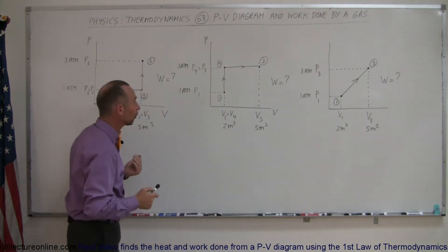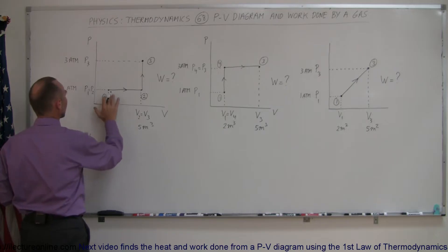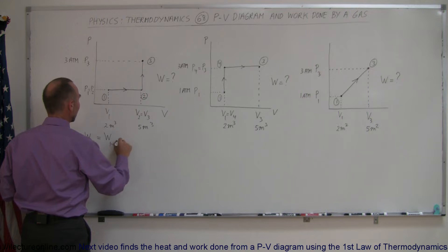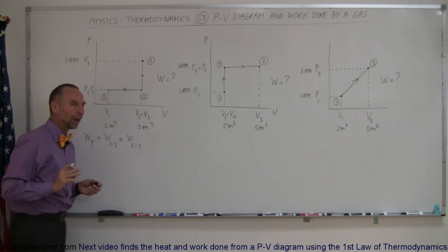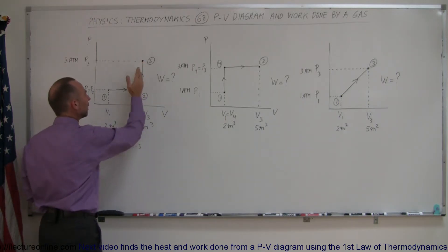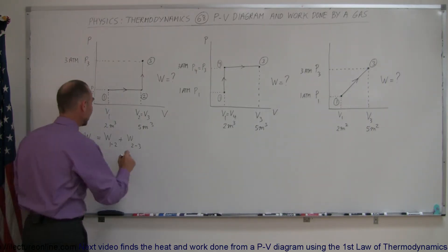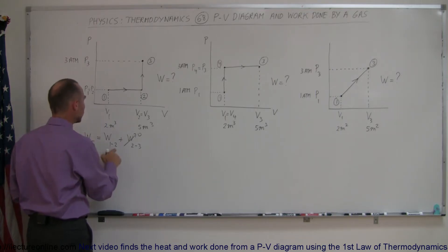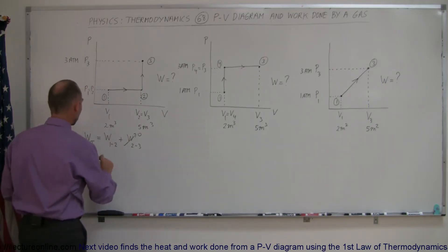The total work done going from one to three is equal to the work done going from one to two plus the work done going from two to three. When we go from two to three, the volume doesn't change, so the work done is automatically zero. Therefore, the total work done is simply the work done going from one to two, and since in that case the pressure doesn't change, it equals pressure times the change in volume.